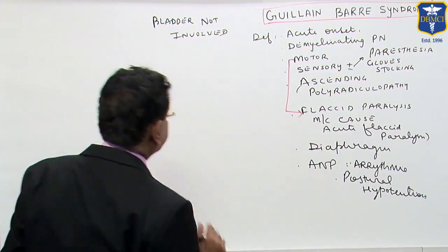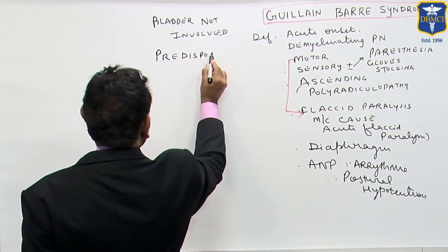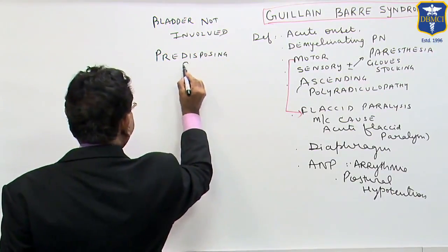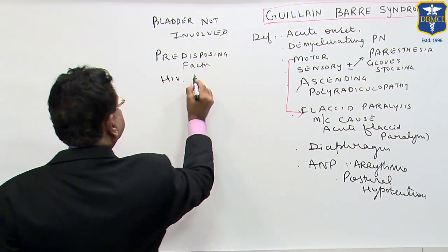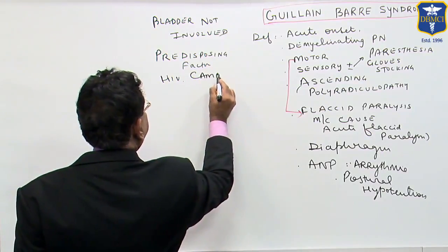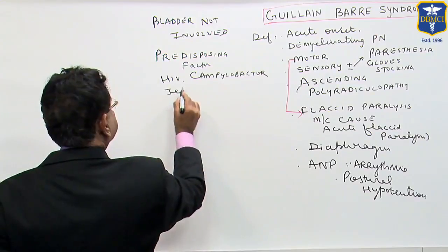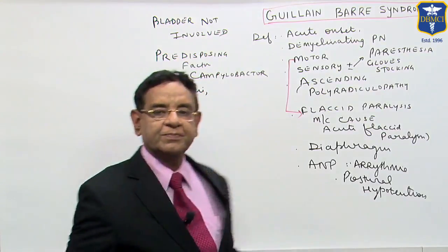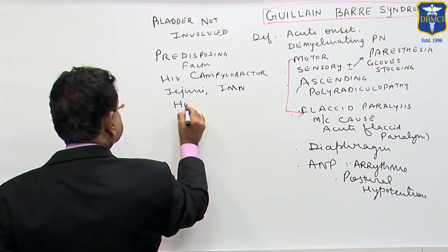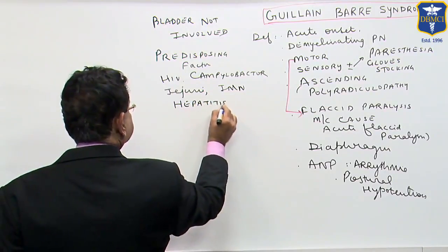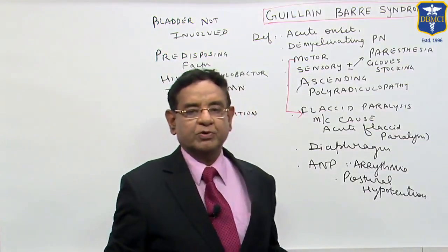Now, what are the predisposing factors? It is usually associated with HIV infection, Campylobacter jejuni infection, infectious mononucleosis, hepatitis, and after vaccination. These are some of the predisposing factors.